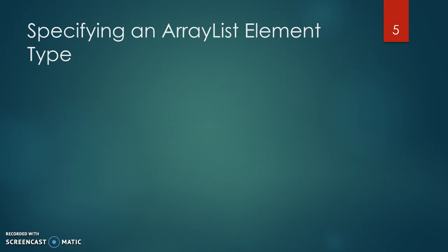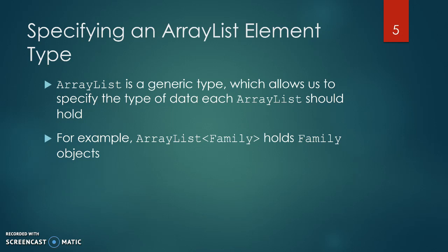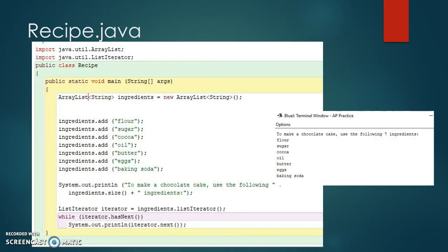Specifying an ArrayList element type. ArrayList is a generic type, which allows us to specify the type of data each ArrayList should hold. For example, ArrayList of family holds family objects. This is Recipe.java. The recipe program declares an ArrayList of String. It stores and prints a list of ingredients for a recipe. The elements are added with the .add method. The ListIterator method of ArrayList returns a ListIterator object that can be used to iterate through the items in the list.